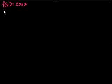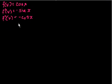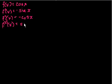What's f prime of x? What's the first derivative of cosine of x? That just equals minus sine of x. What's the second derivative? That's just minus times the derivative of sine of x. The derivative of sine of x is cosine of x, so it's minus cosine of x.